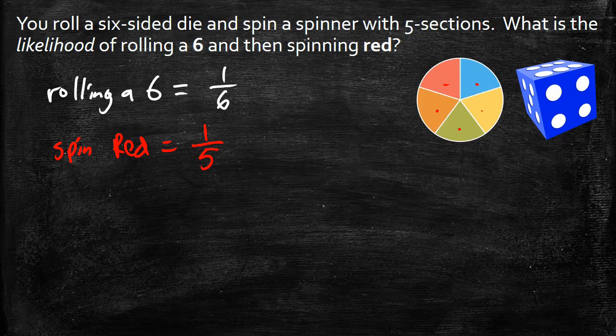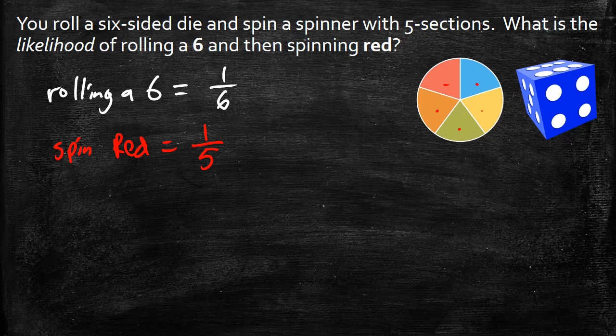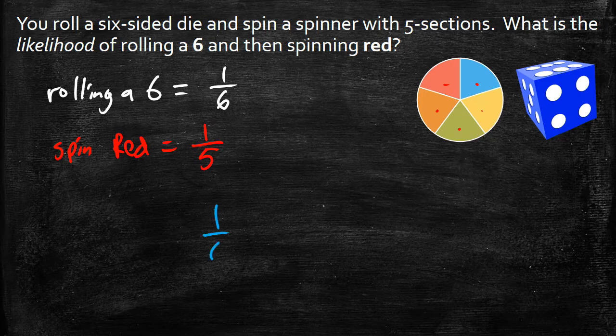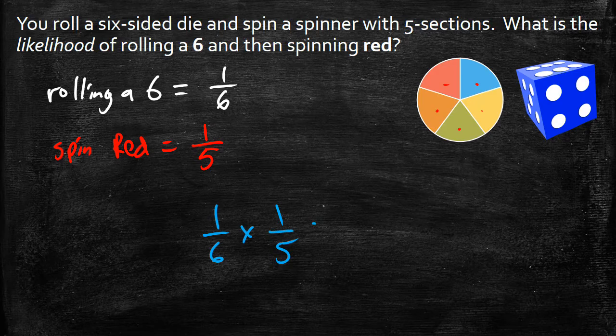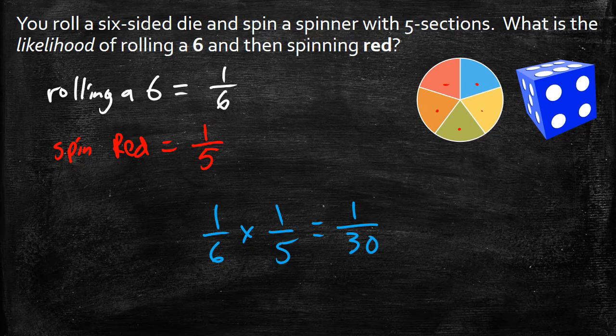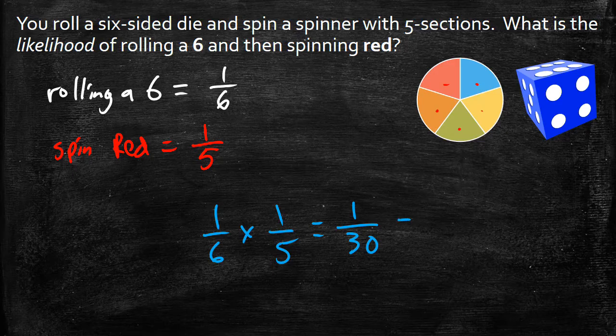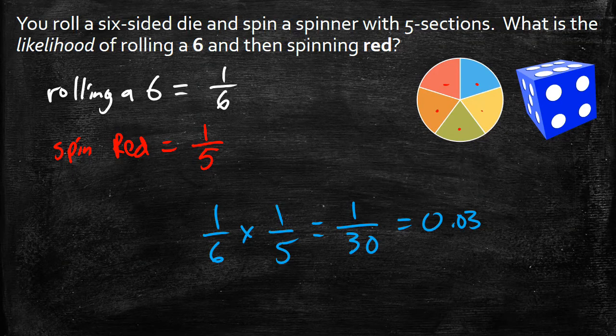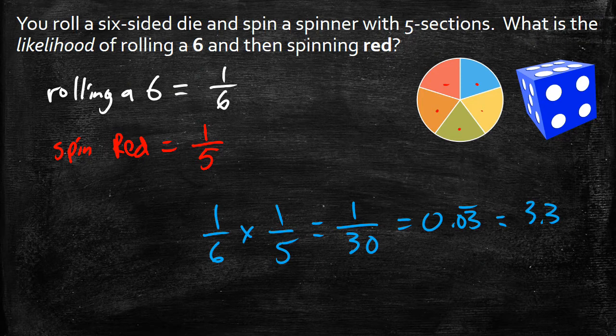Now, just like we saw in the previous section here, to find the probability of doing both of these, I can just multiply these together. So I can go probability of rolling a six, which is 1/6, times the probability of spinning a red, which is 1/5. One times one is going to give me one over six times five, which gives me 30. So my probability here is one out of 30, or we can write that as 0.03 repeating, or we can write that as 3.3 repeating percent.